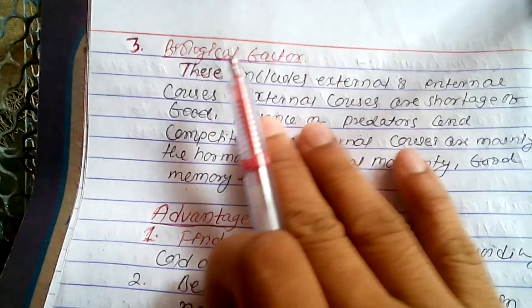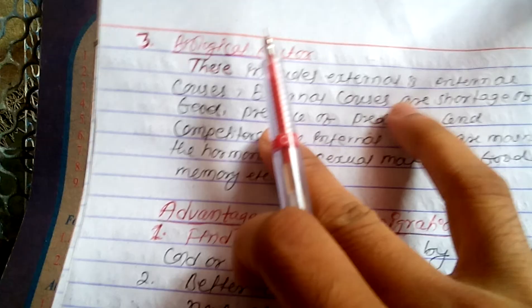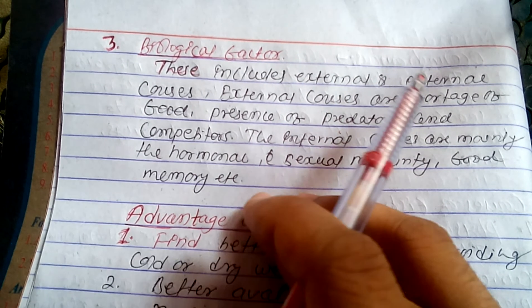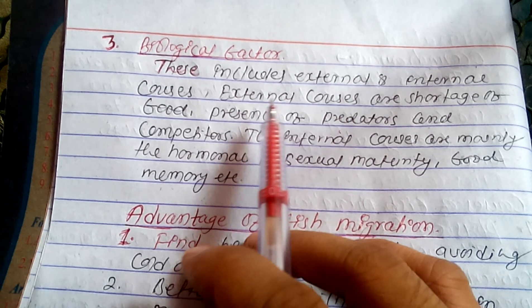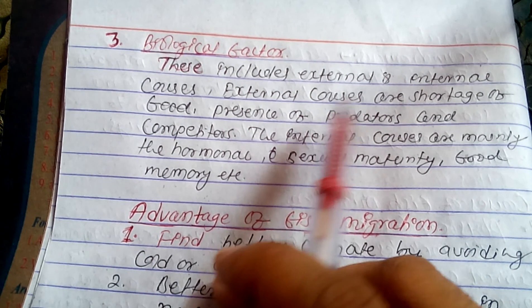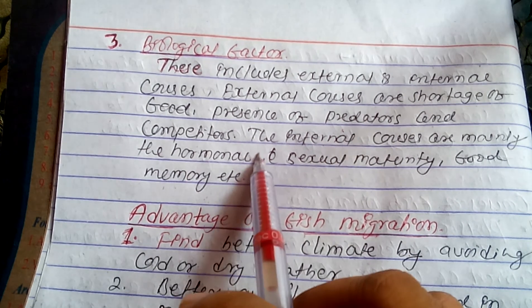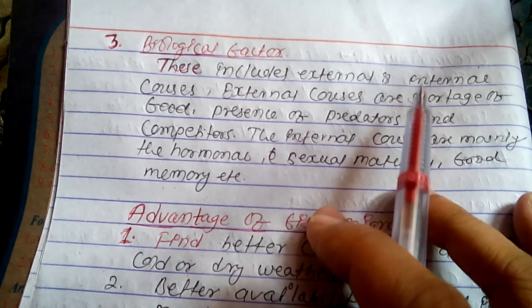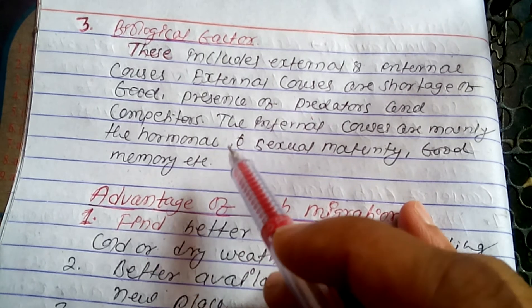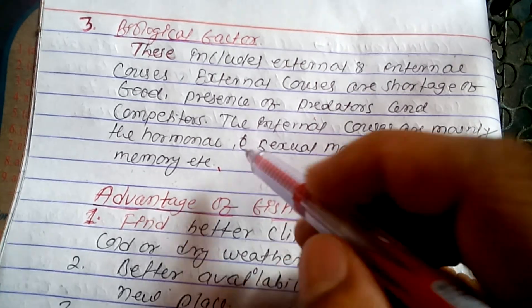The biological factor includes both external and internal factors. External causes include shortage of food, presence of food, presence of predators, and competition. Internal causes include hormonal changes, sexual maturity, and food memory — as well as heredity.